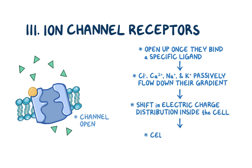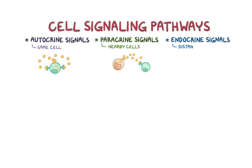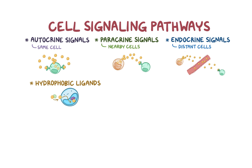As a quick recap: autocrine signals target the same cell, paracrine signals target nearby cells, and endocrine signals target distant cells. Hydrophobic ligands are able to diffuse across the cell membrane and bind to receptor proteins inside the target cells. Hydrophilic ligands are unable to cross the cell membrane, so they must bind to transmembrane receptors, which have an intracellular end that triggers a signaling pathway inside the target cell. There are three major transmembrane receptor classes: G-protein coupled receptors, enzyme-coupled receptors, and ion channel receptors.